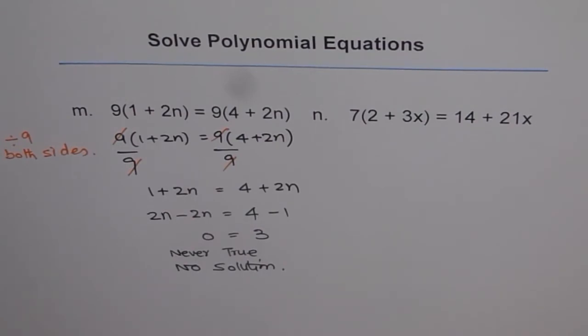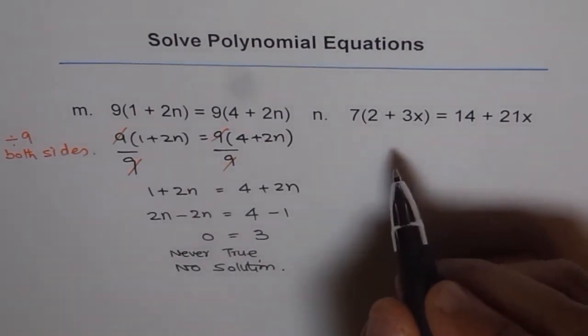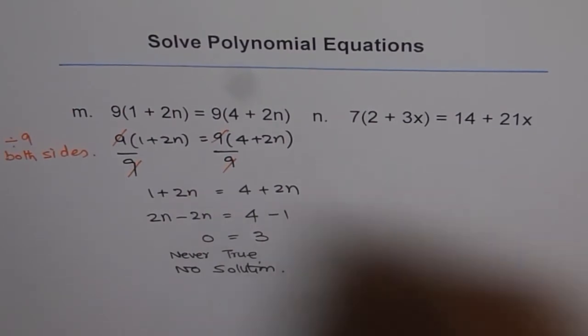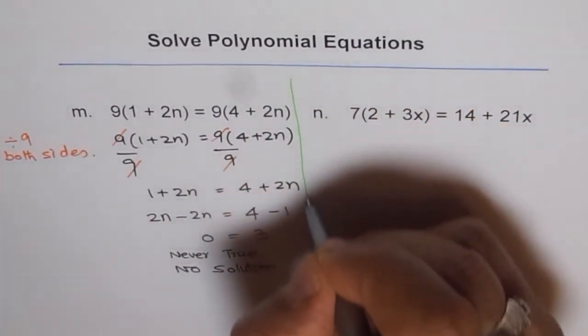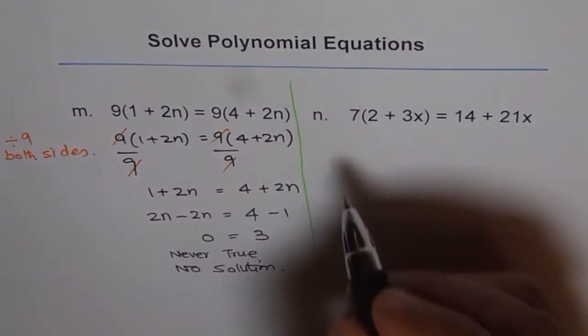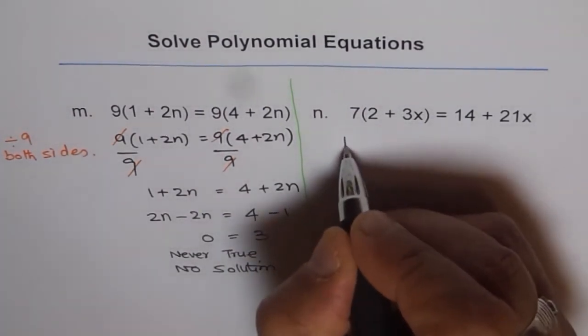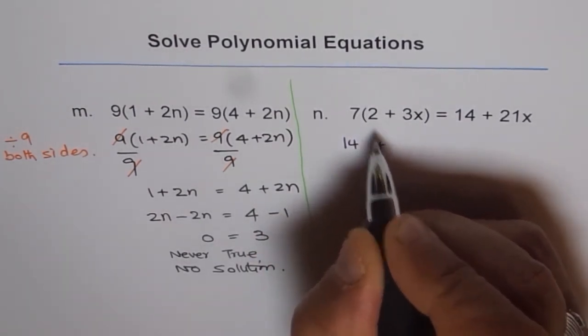Let's consider the next equation. So here what we will do is we will expand the left hand side and then solve for x. So if we expand left hand side, we get 7 times 2 as 14 plus 7 times 3,